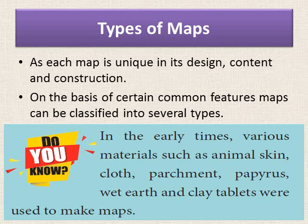Now children, let us see what are the different types of maps. As each map is unique in its design, content, and construction — it could be a political map, an outline map, a relief map, and so on — maps can be classified into several types on the basis of certain common features.